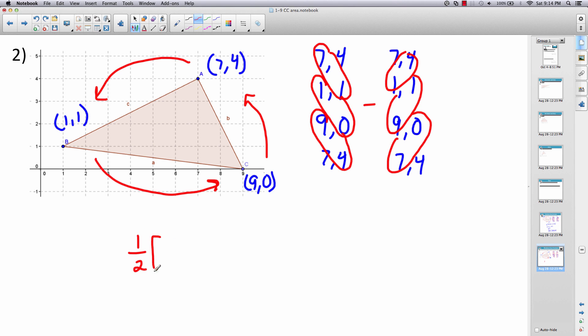So 7 times 1 is 7, 1 times 0 is 0, 9 times 4 is 36. Minus: 4 times 1 is 4, 9 times 1 is 9, 7 times 0 is 0.